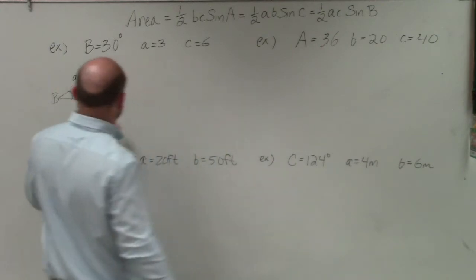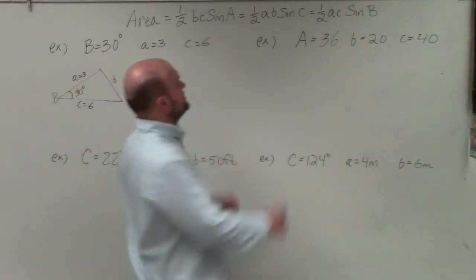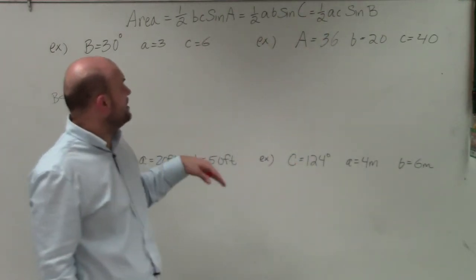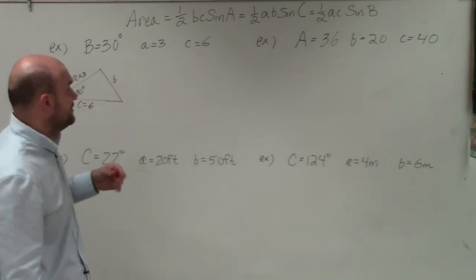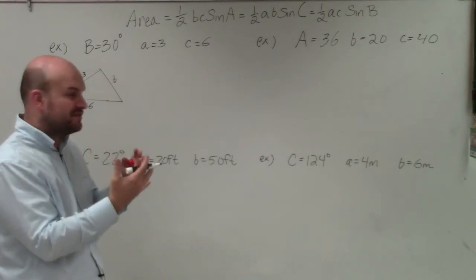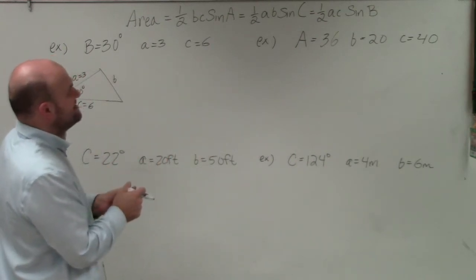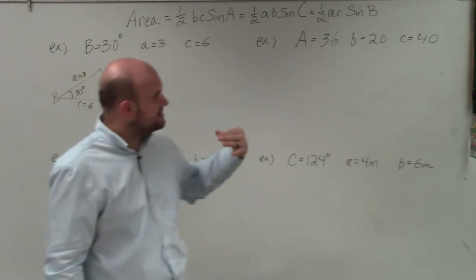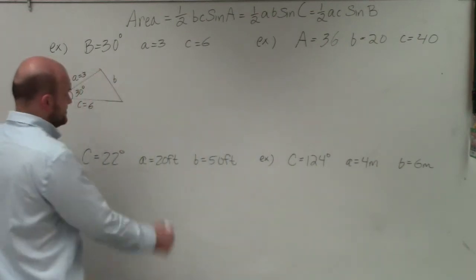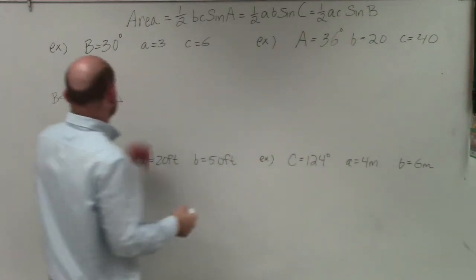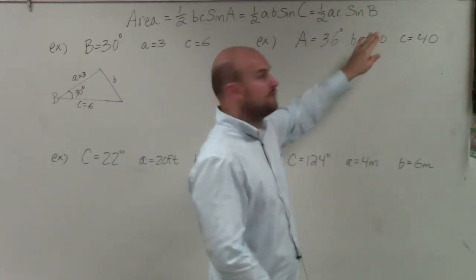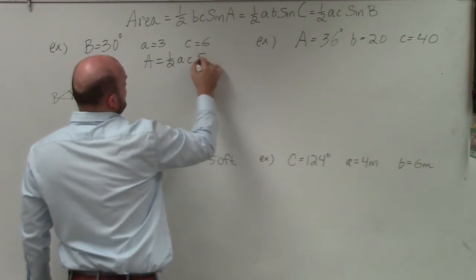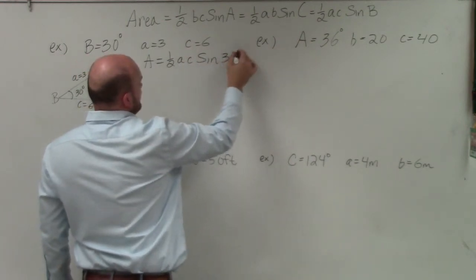So the formula basically states here, and it doesn't matter. You can see that I wrote these kind of interchangeably. The area of an oblique triangle is equal to 1/2, one side times the other side times the sine of your angle. So you could really just take one of these and just interchange the variables. But I wrote them all down there so you can kind of see. So basically, when identifying this, one way to go about this is to take a look at your angle that you have. In this case, I'm given angle B. And so I'll just look at this formula. So I can say area is equal to 1/2 a times c times the sine of b, which is 30 degrees.